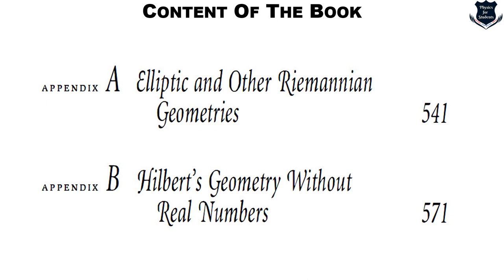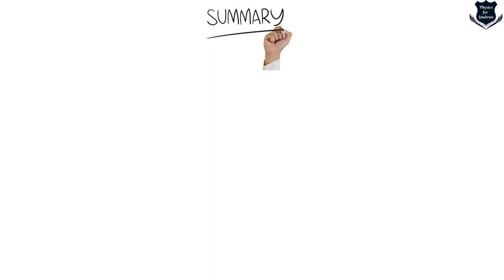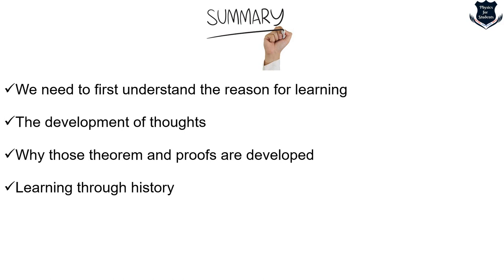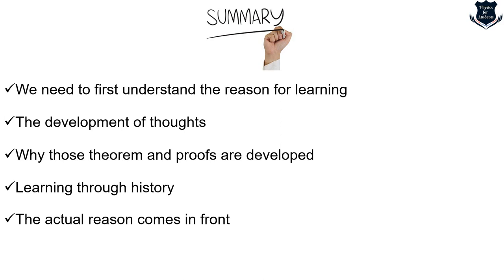To summarize: we need to first understand the reason for learning, then how the development of thoughts took place, why those theorems and proofs were developed, and what learning through history means — which makes it more interesting and brings the actual reason in front of you. This is the first book before going into anything else like the Gauss-Bonnet theorem and so on. I know it contains a lot of pages and is a long read, but you will see how the entire journey of differential geometry evolves in front of you — living through the philosophers and mathematicians from the ancient Greeks to Bolyai and other geometers. That gives you the motivation and makes you fall in love with differential geometry.